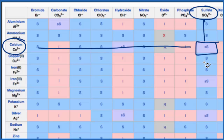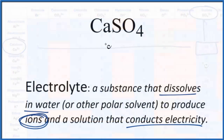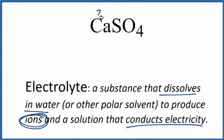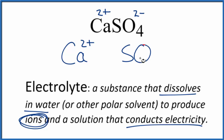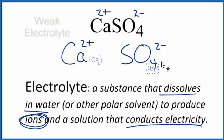So we have our ions. Calcium always forms 2+ ions, and the whole sulfate ion is always 2 minus — good one to remember. So we'll have calcium ions, Ca2+, and we'll have sulfate ions, SO4 2-, with AQ after them since they are dissolved in the water.